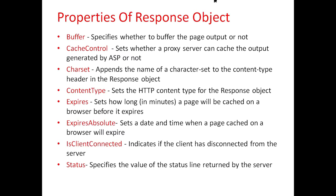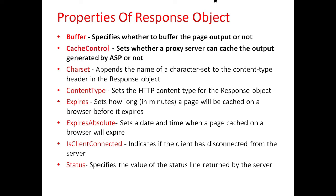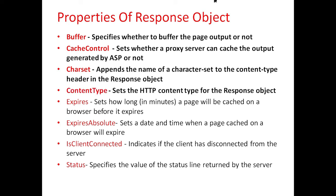Different properties of the response object are: Buffer, which specifies whether to buffer the page output or not. CacheControl, which sets whether a proxy server can cache the output generated by ASP or not. Charset, which appends the name of the character set to the content type header in the response object. ContentType, which sets the HTTP content type for the response object.